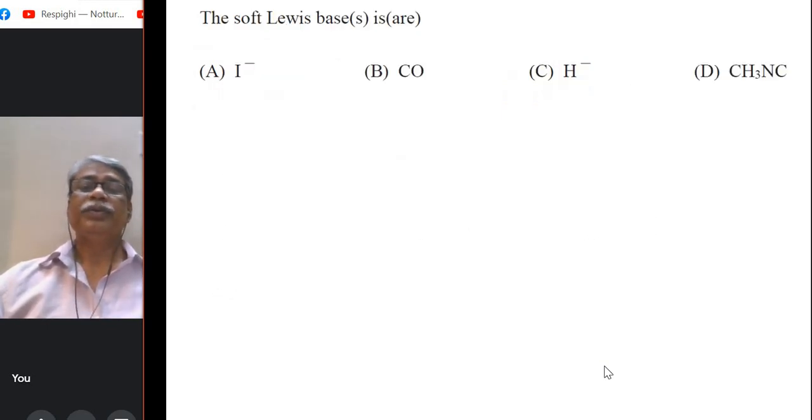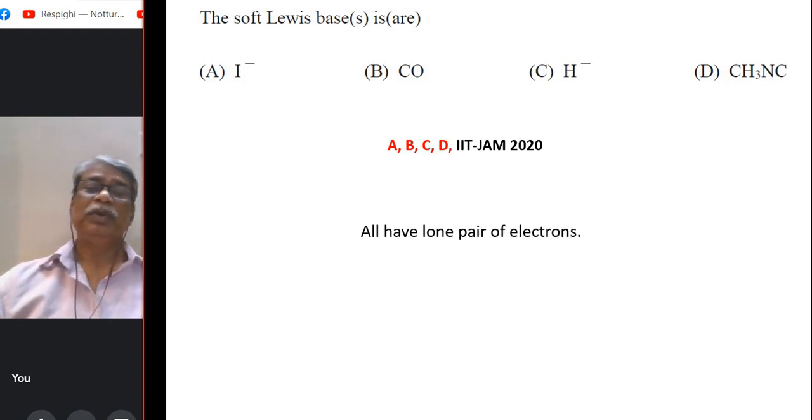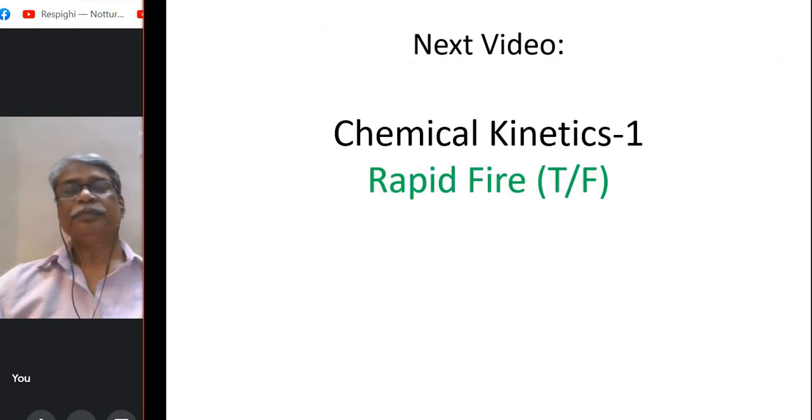The soft Lewis base is or are. Four options are there and interestingly all 4 are right options A, B, C, D because simply because all have lone pair of electrons, that is the basic definition of Lewis base.